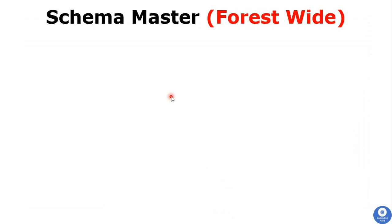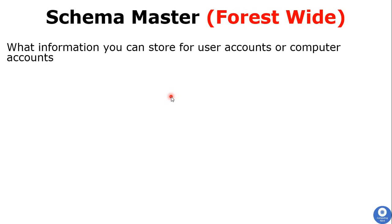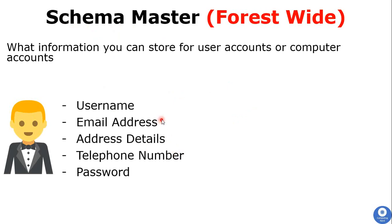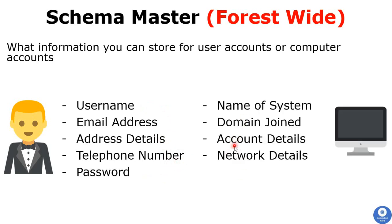The first FSMO role is Schema Master, which is a forest-wide role. Schema defines the framework for objects created in Active Directory — it defines what information will be stored about user accounts, computer accounts, or group accounts. For example, for a user account you can store details like username, address, telephone number, and email address, and the same applies to computer accounts and other devices in your organization.